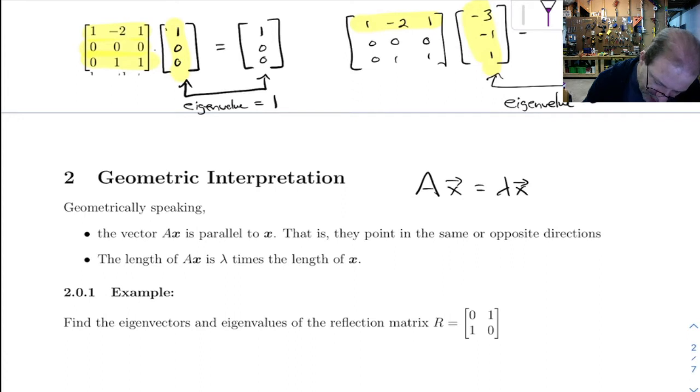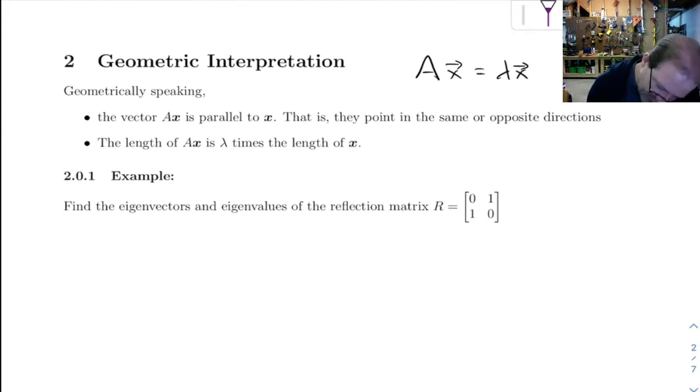So one way of saying that is the vector A⃗x is parallel to ⃗x. In other words, they point in the same or opposite direction, and the length of A⃗x is lambda times the length of ⃗x. So thinking like that, let's look at the eigenvectors and eigenvalues of a couple of different matrices.